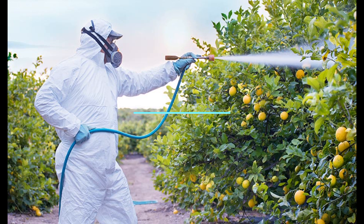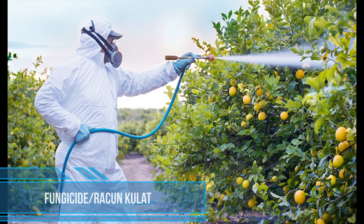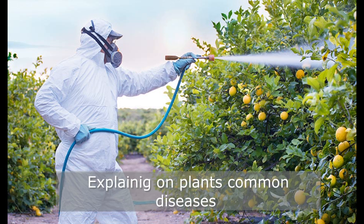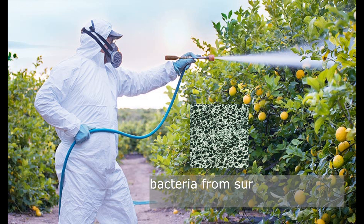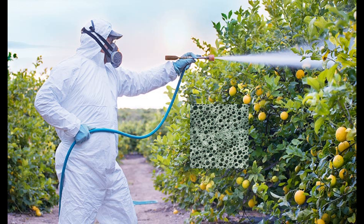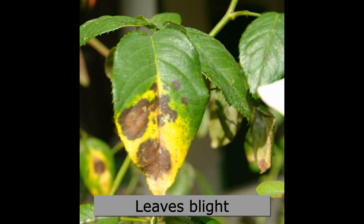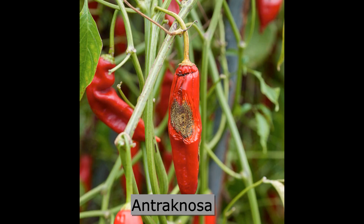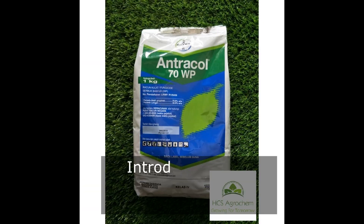Number three: I'll also spend some time talking about fungicide, or rachun kulat. Every farmer, more or less, when planting their crops will encounter such problems when the surrounding weather gets too humid or the plants are too weak — they become susceptible to bacteria. This is why we need good fungicide to cope with this problem. Farmers usually encounter problems such as leaf blight, which is quite normal if not treated properly, and root rot, which usually happens if the roots are waterlogged for a long time.